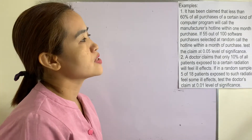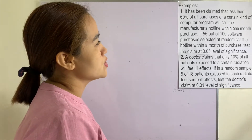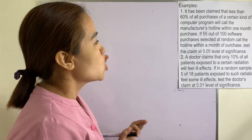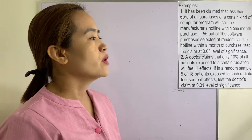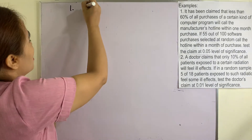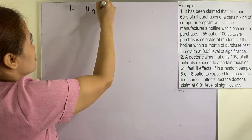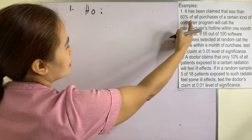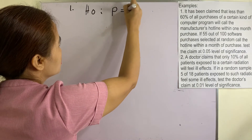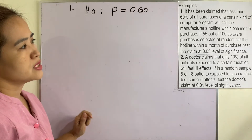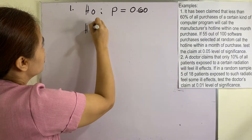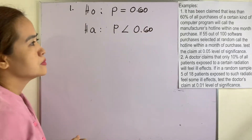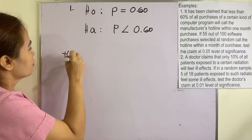Example one: It has been claimed that less than 60% of all purchases of a certain kind of computer program will call the manufacturer's hotline within one month of purchase. If 55 out of 100 software purchases selected at random call the hotline within a month of purchase, test the claim at the 0.05 level of significance. Our null hypothesis is p = 0.60, and our alternative hypothesis is p < 0.60.